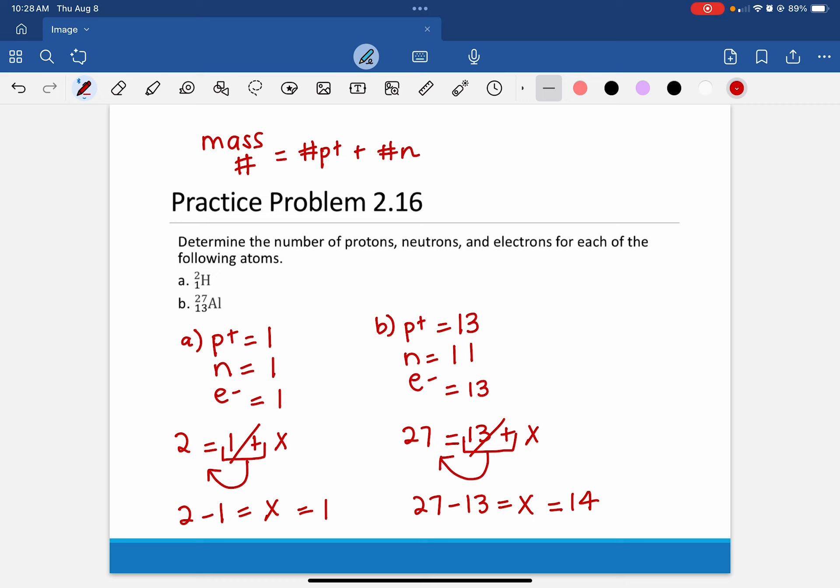So there are 14 neutrons in the nucleus of this atom. That's it for Practice Problem 2.16. Let me know if you have any questions.